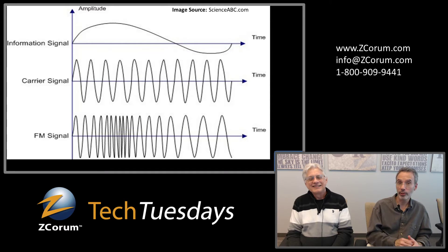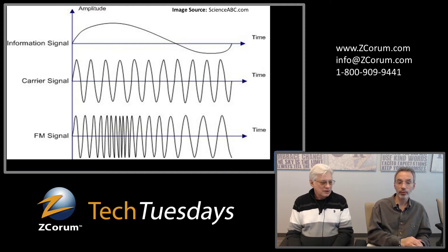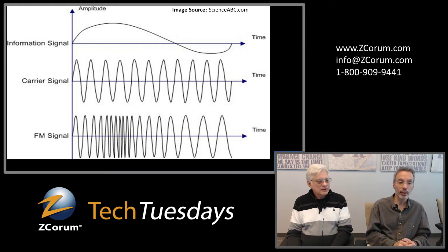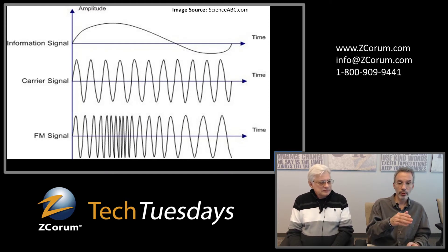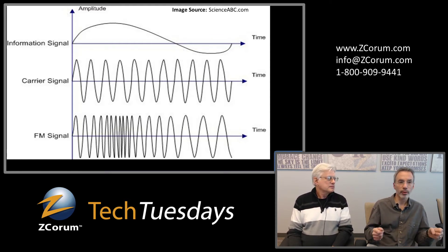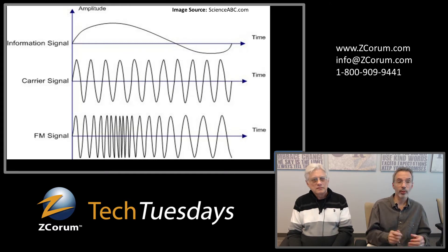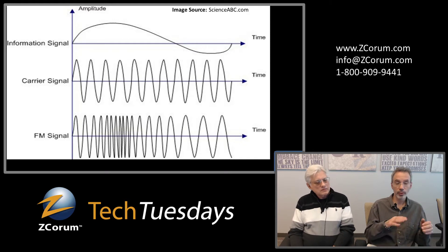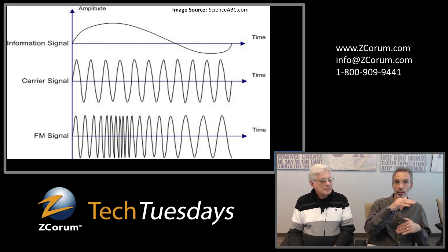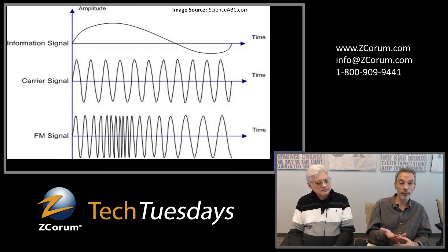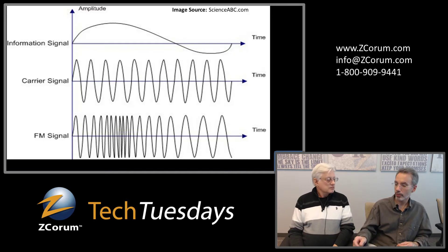With frequency modulation, instead of modifying the amplitude of the signal, you're going to modify the frequency of the waves from peak to peak. As the information signal goes higher, the frequency gets closer and closer together. As it goes lower, the frequency gets further apart. In the pool analogy, you'd send the same size waves each time — the FM signal has the same amplitude — but sometimes you send them closer together, encoding information that way. There's a nice animation showing AM and FM together.